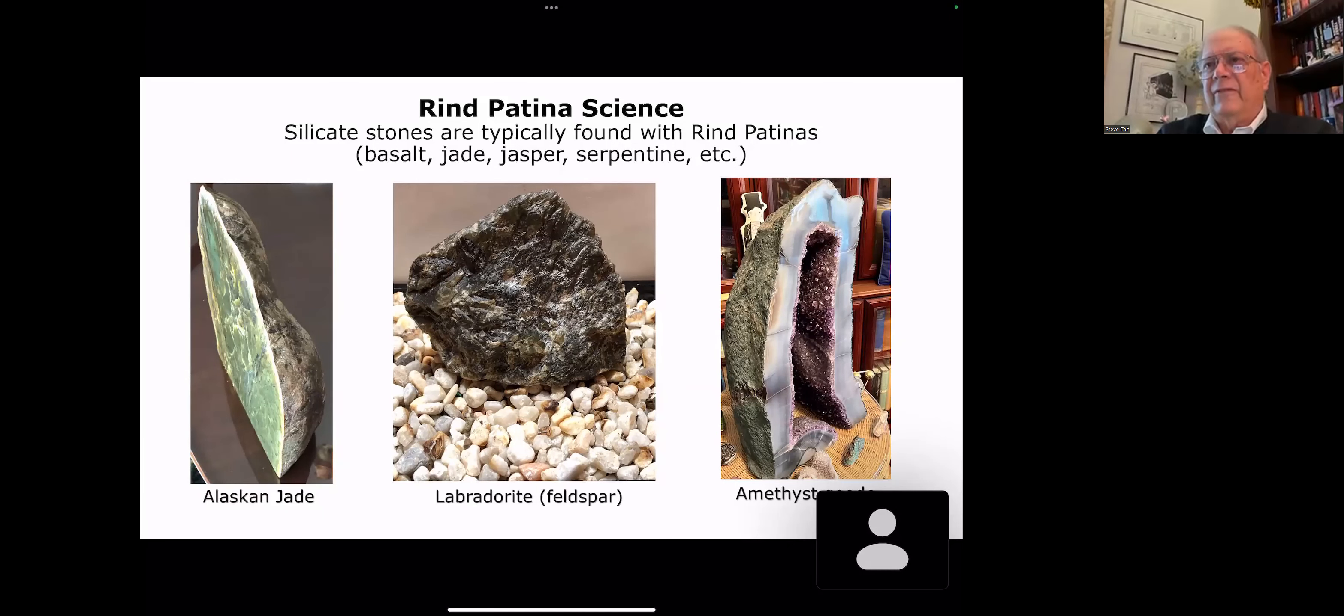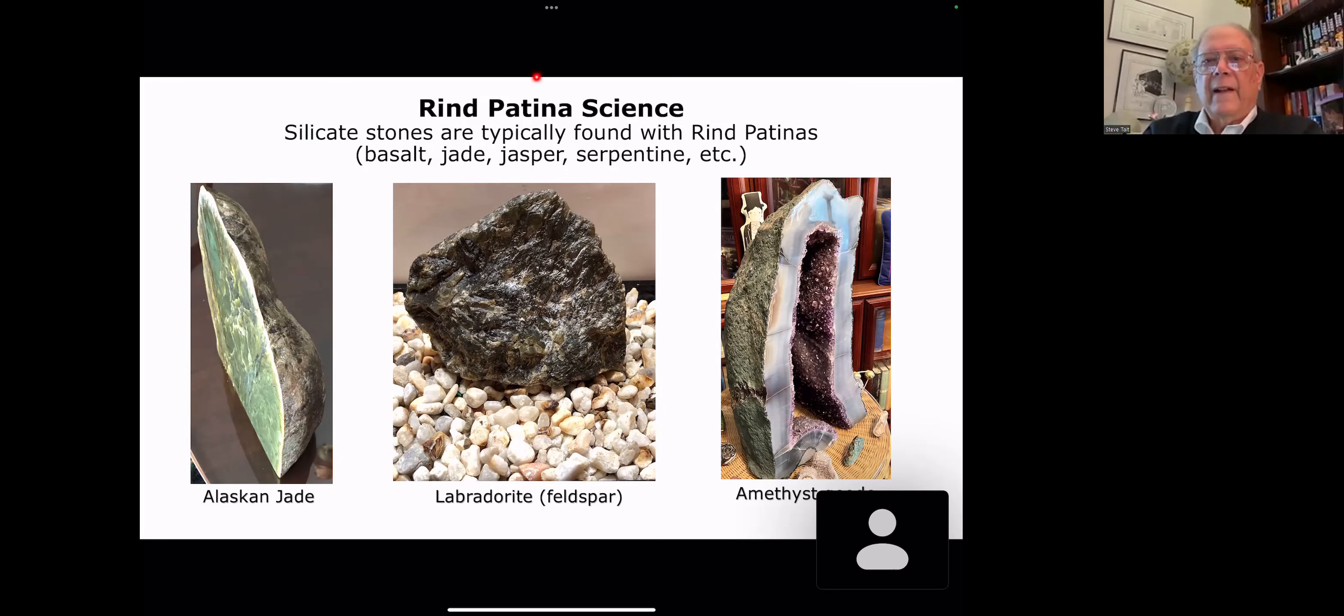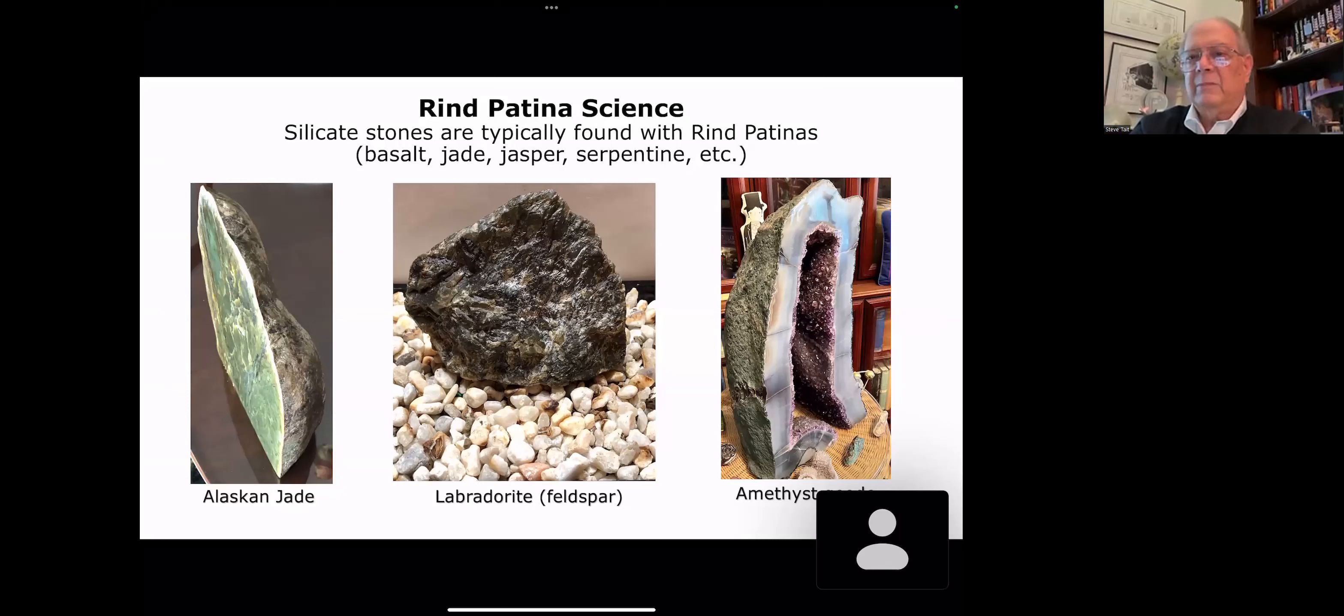Most of your silicate stones are typically found with rind patinas, silicates being basalt, jade, jasper, serpentine, and so on. This is a large piece in our mineral collection. It's nephrite based on the texture of the stone, but I haven't done a spectral analysis, so I just have to give you my best guess at this point. Notice that it's covered with a dark gray rind. You can see the edge of the rind along here. If you found this on the ground, you need to know what you're looking for. The person who found this that I bought it from knew they were looking for jade. You would have looked at this and said, well, that's ugly. I'm not going to pick that up.